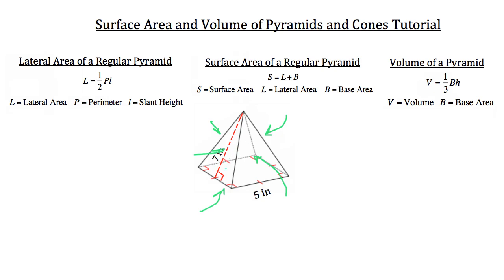Let's take this first example and calculate these three things, beginning with the lateral area. The formula for lateral area is equal to one-half the perimeter of the base times the slant height. The slant height is this seven-inch line — it's the distance traveling up from one edge of the square base to the top point. Since we're dealing with a square base, the perimeter is easy to calculate: in this case it's 20 inches.